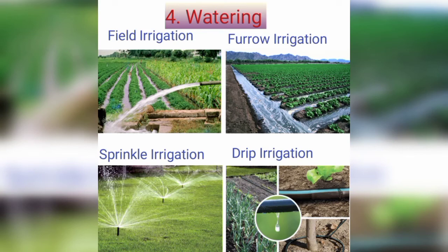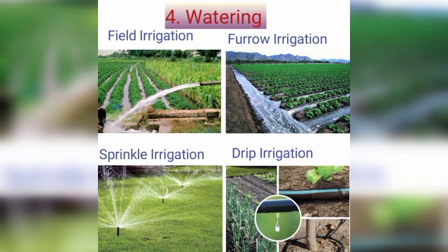Crops grow well if they get the right amount of water at the right time. There are different irrigation methods: field irrigation, where water is simply released into the field; furrow irrigation, where water is released into furrows; and sprinkler irrigation, where water is lifted by a pump, led through pipes with sprinklers, and sprayed on the crops.